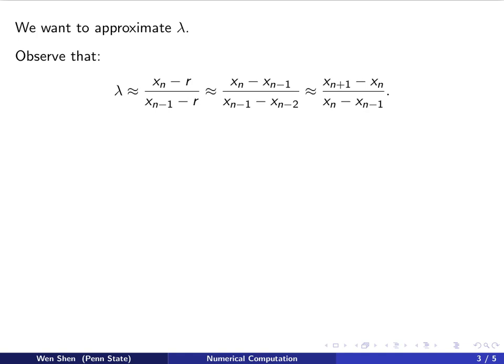Okay, so how do you find an approximation for lambda? Well, lambda is the ratio between the error at step n over the error at step n minus 1. And with simple manipulation,